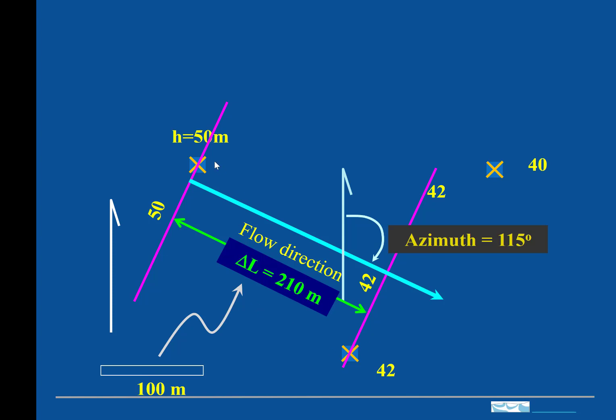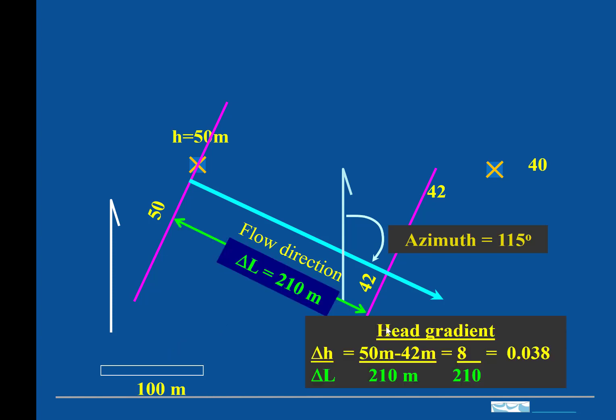And the difference between the head here and the head here is delta H. And so the head gradient will be delta H over delta L in the direction that is perpendicular to the contours.